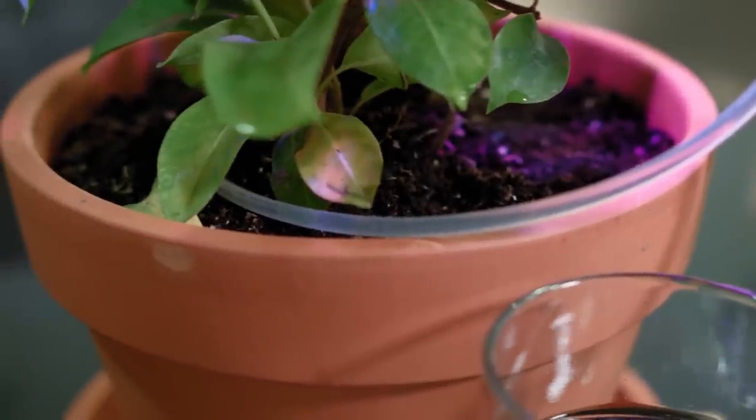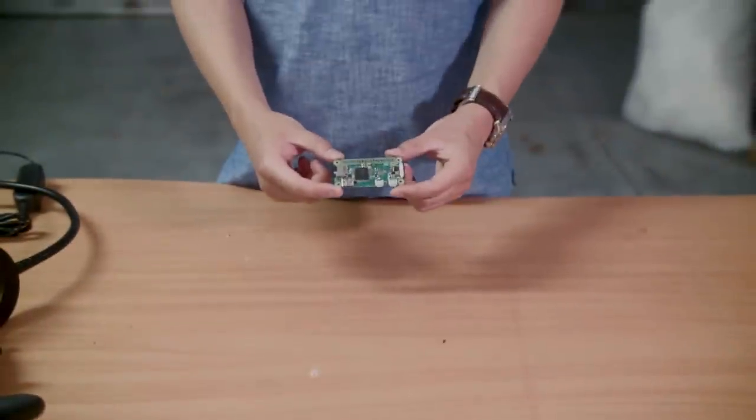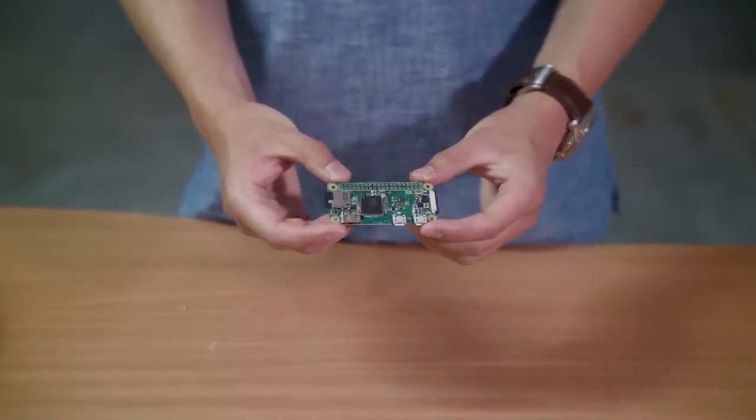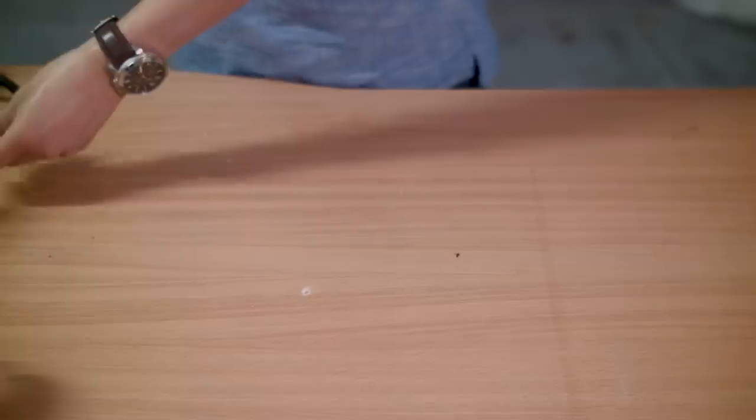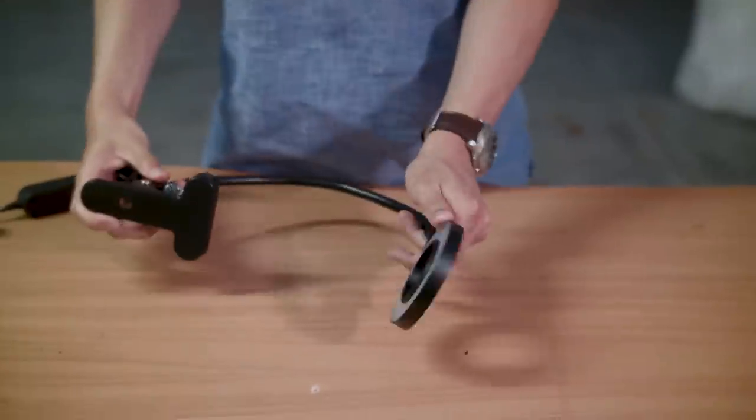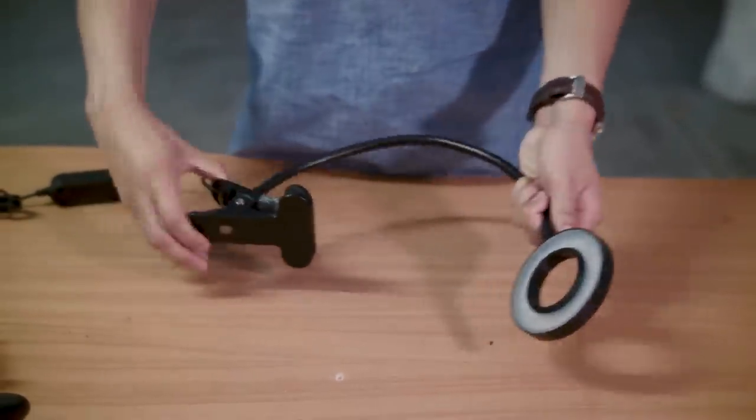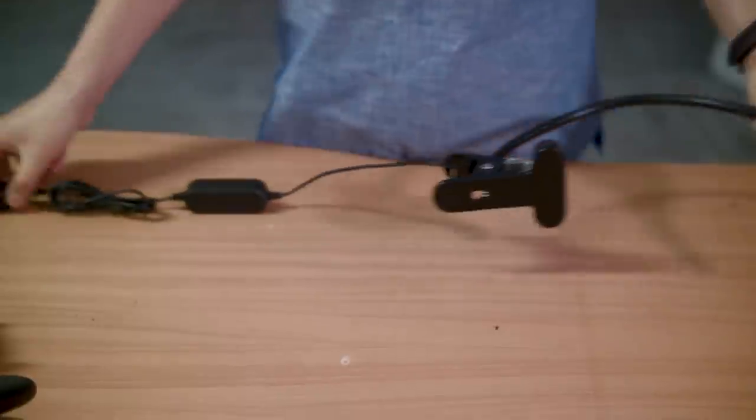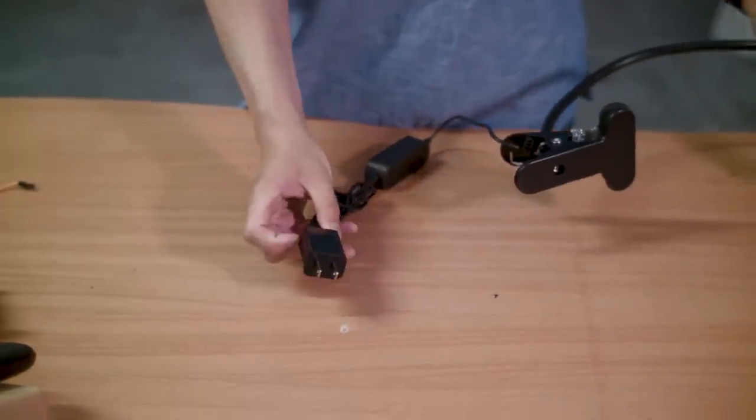Let's get started. For this project we're going to be using a Raspberry Pi Zero W. It has built-in Wi-Fi. We're also going to be using this LED grow light. It's powered by 5 volt USB. It's important that this is 5 volts so that we can power it by our Pi.